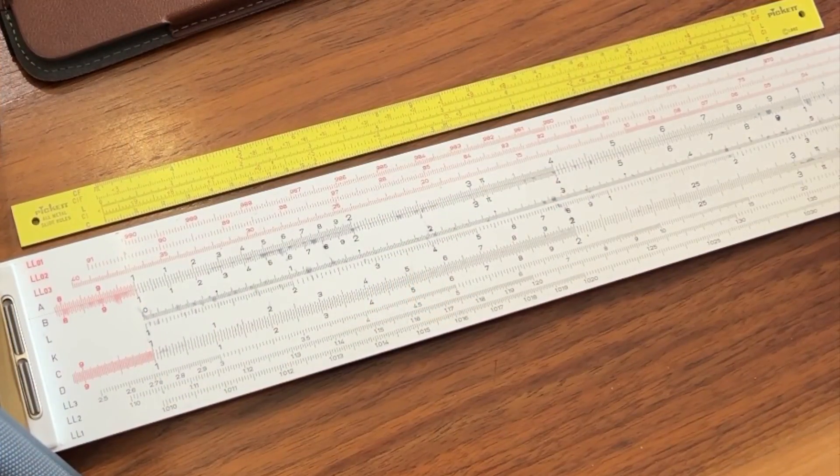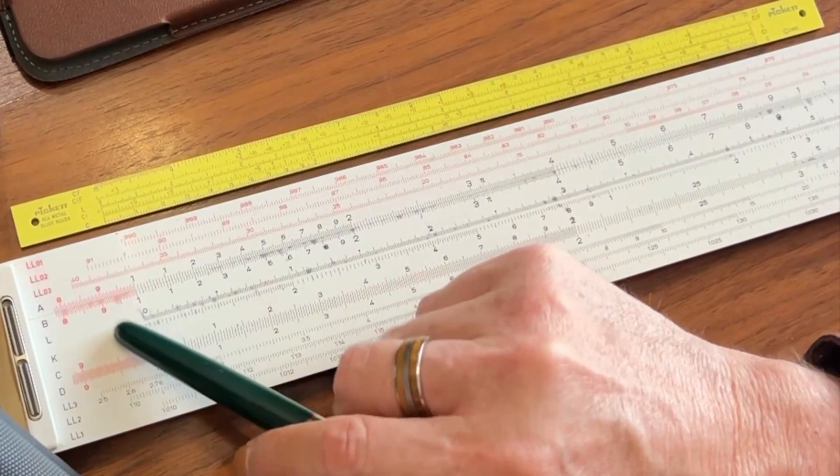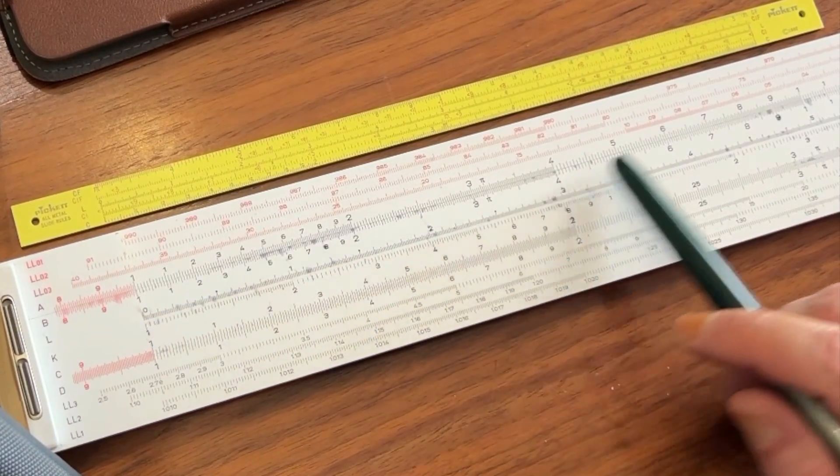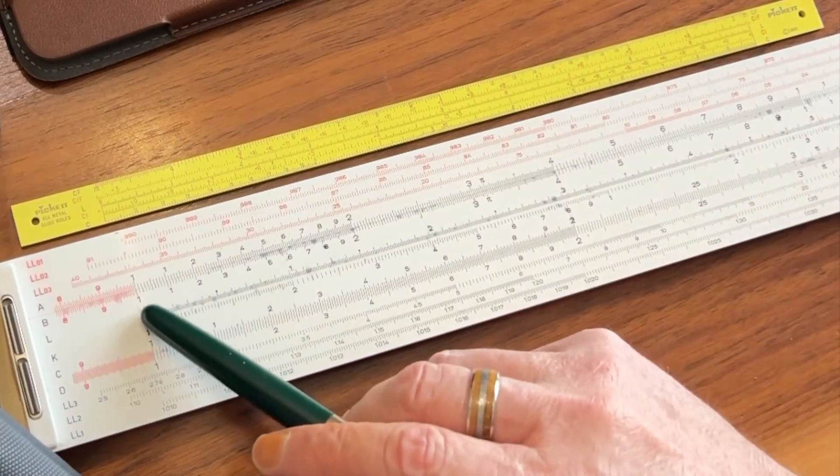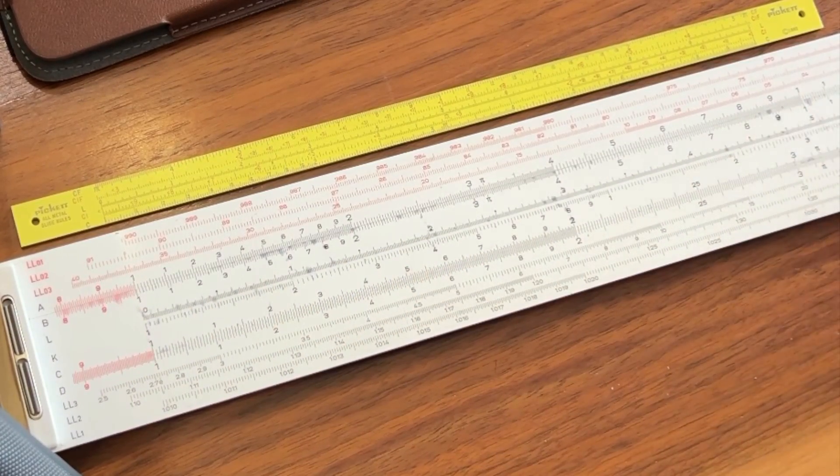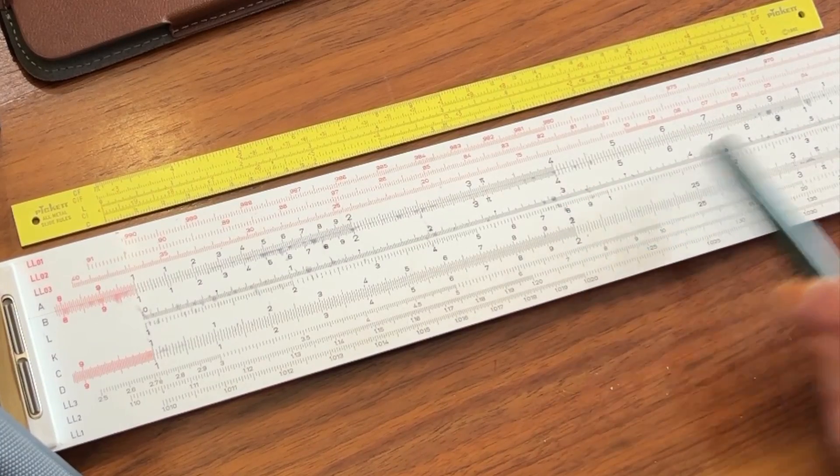The first thing I want to talk about is the A-B scale, and we're going to look at the A-B scale on this Aristo Studio 1068 20-inch slide rule. It goes from 1 to 10, and then it also repeats again on the right side from 1 to 10.